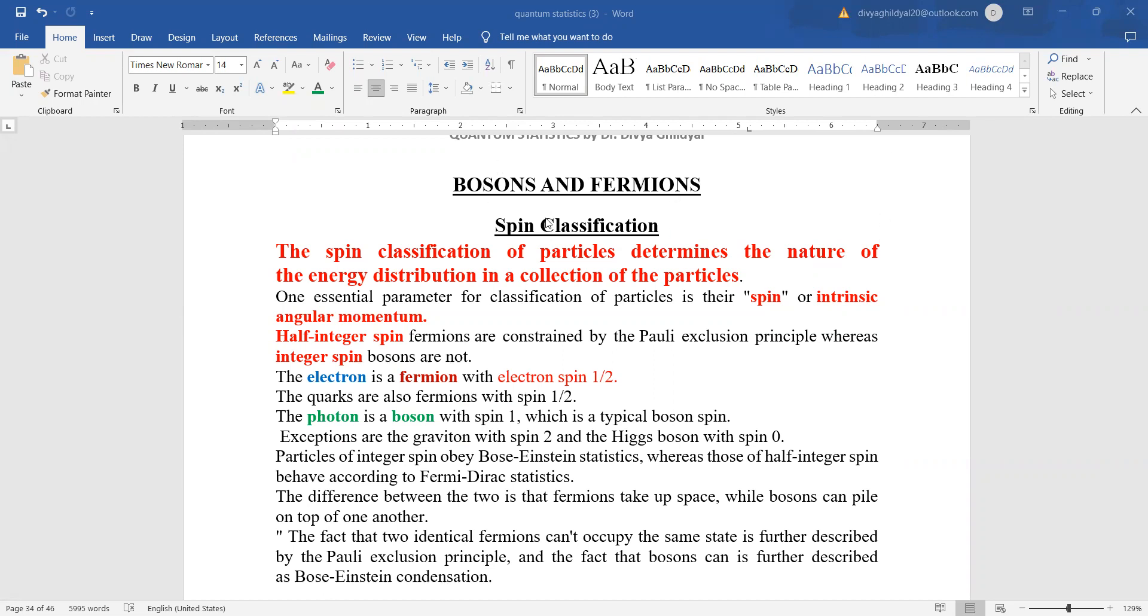Firstly, we should know spin classification because spin classification helps us in determining whether the particle is a boson or a fermion, because this question is asked a lot. The spin classification of particles determines the nature of energy distribution in a collection of particles. So the essential parameter where we can classify whether the particle is a boson or a fermion is the spin or intrinsic angular momentum.